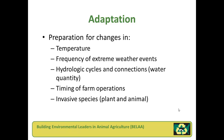How can things like temperature, the frequency of extreme weather events, hydrologic cycles and connections which would affect the availability of water, the timing of farm operations, or the presence of invasive species impact things like a crop rotation, your choice in crops or hybrids?